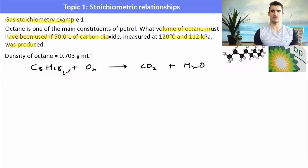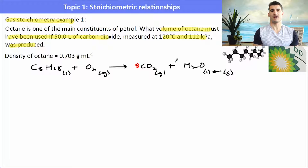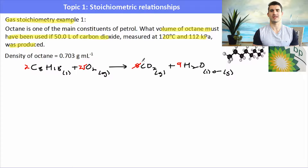Octane is a liquid, oxygen is a gas, and carbon dioxide is a gas; water may be liquid or gas depending on temperature. We balance for carbon, then hydrogen. We have an odd number of oxygen, so we get that odd number, put it in front of O2, then double everything else to get the balanced chemical equation.